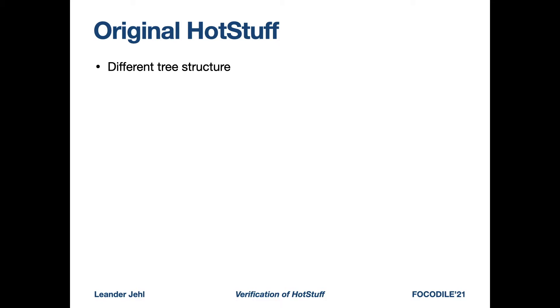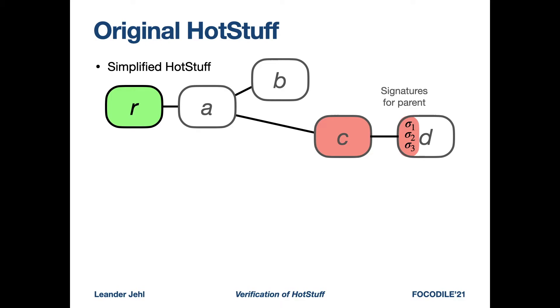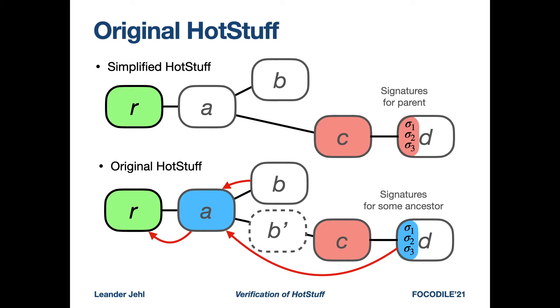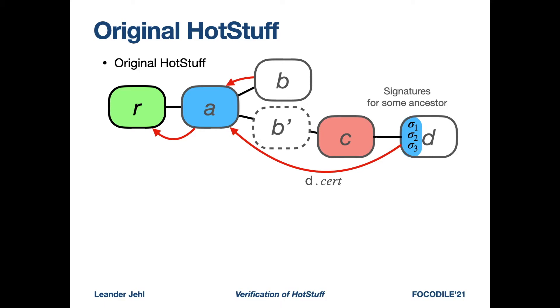So what about original HotStuff? Well, the original HotStuff has a slightly different tree structure. In simplified HotStuff, blocks contain signatures for their parents. In original HotStuff, blocks have a parent, but they contain signatures for some ancestor. So in the lower tree, the block D contains a signature for block A or multiple signatures. These signatures or certificates add additional links to the tree.